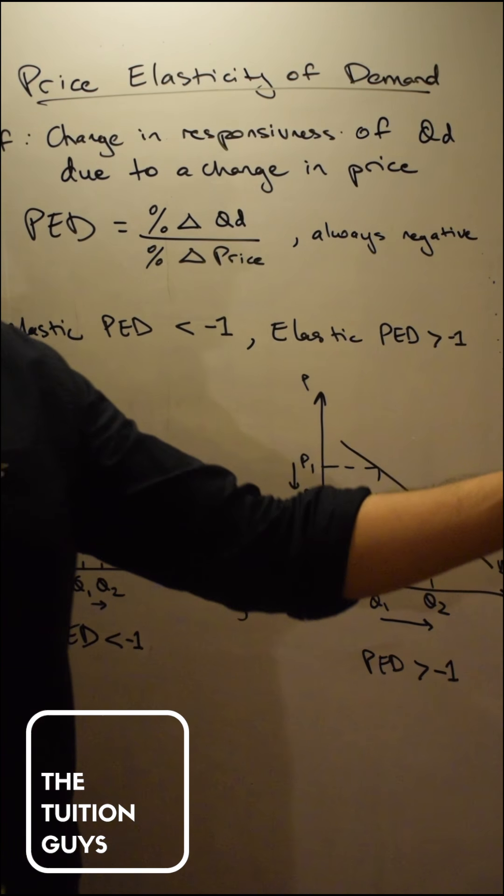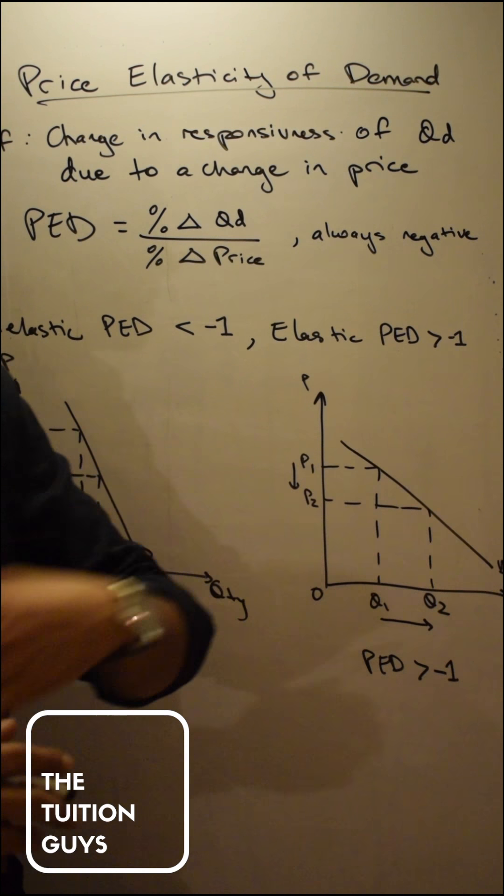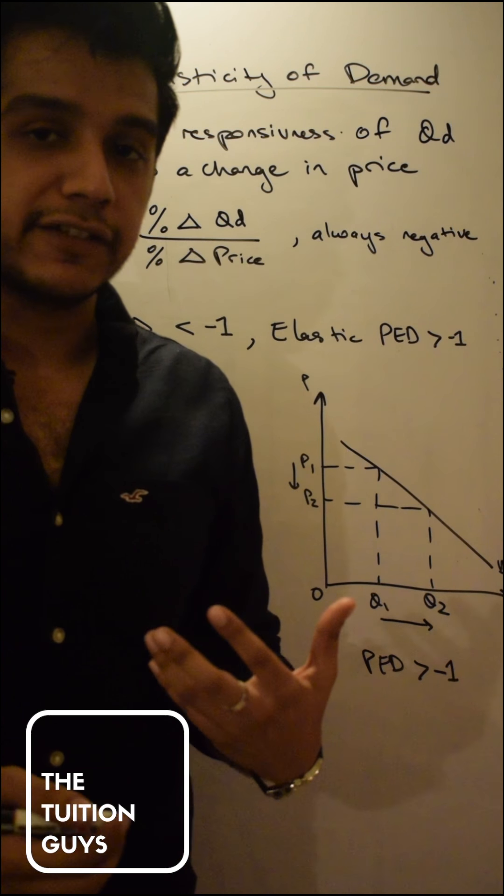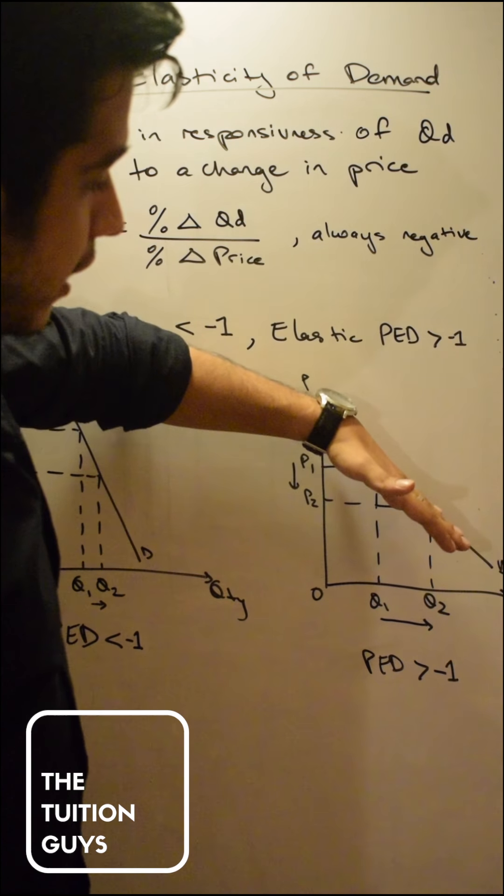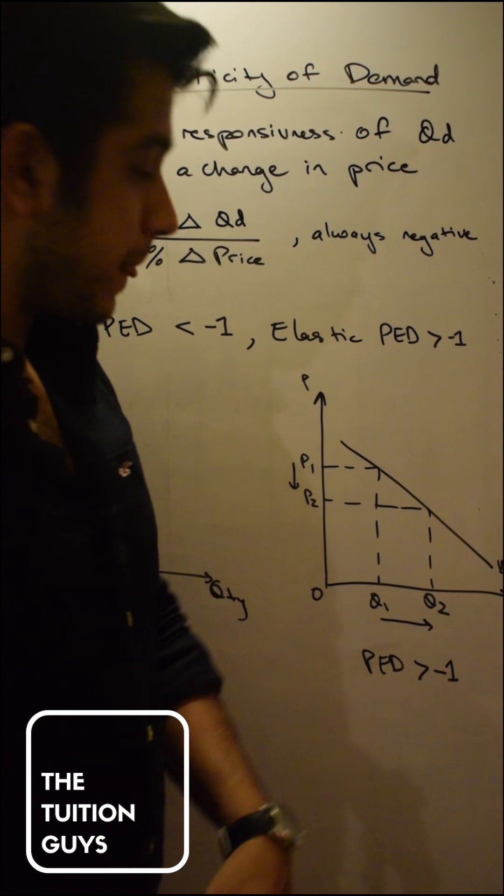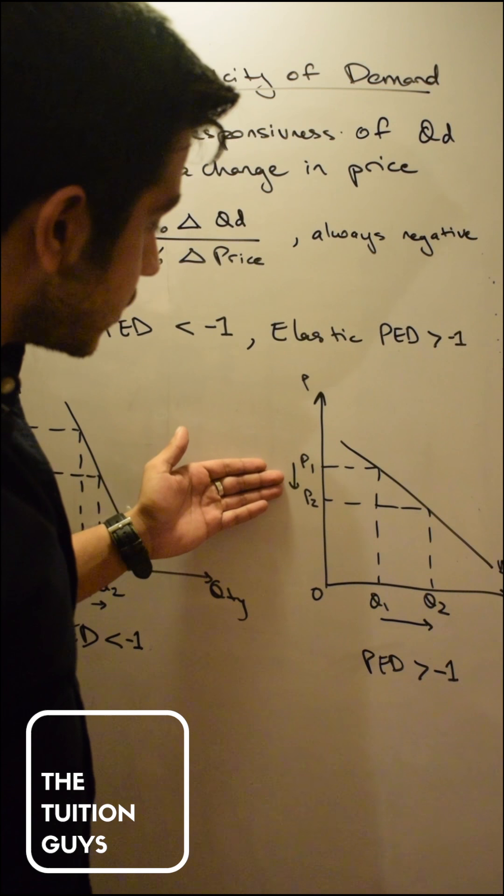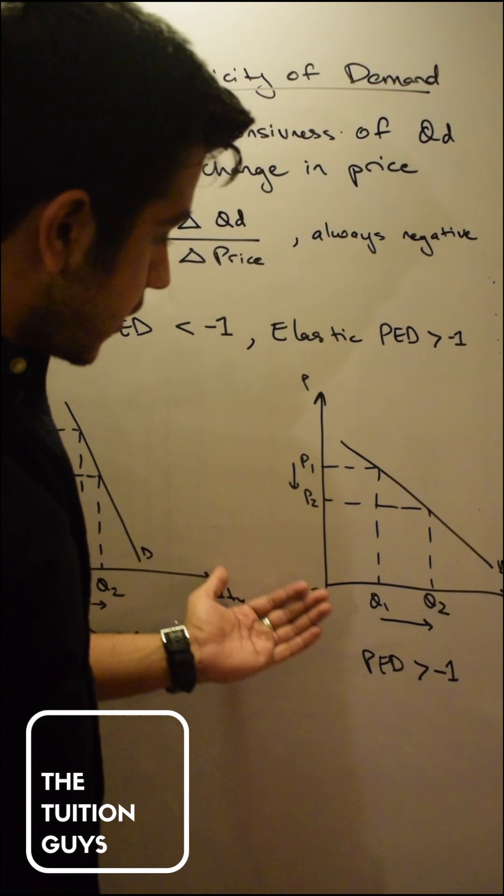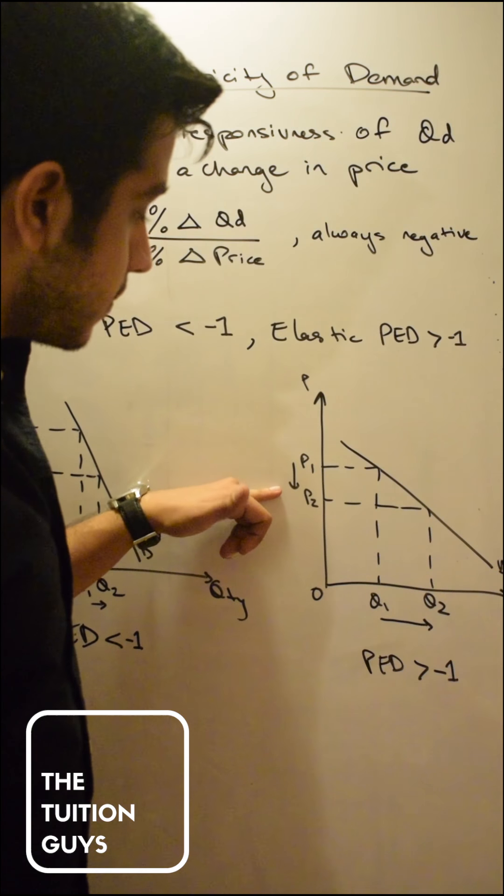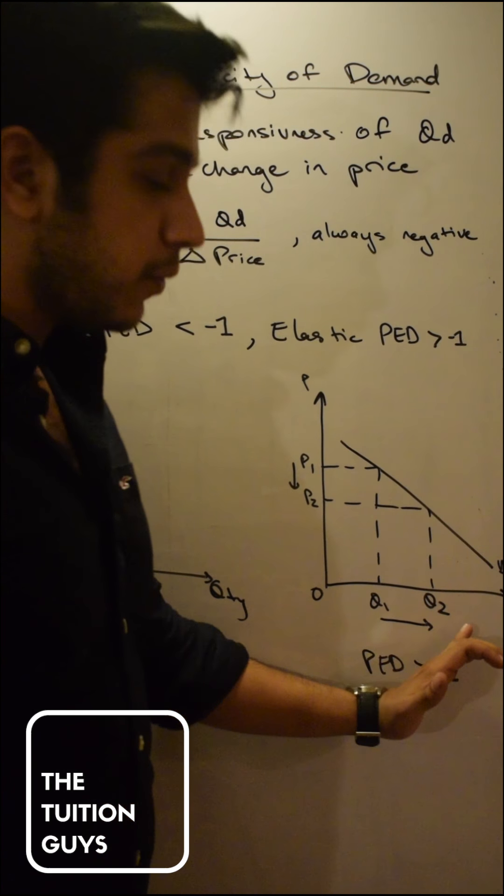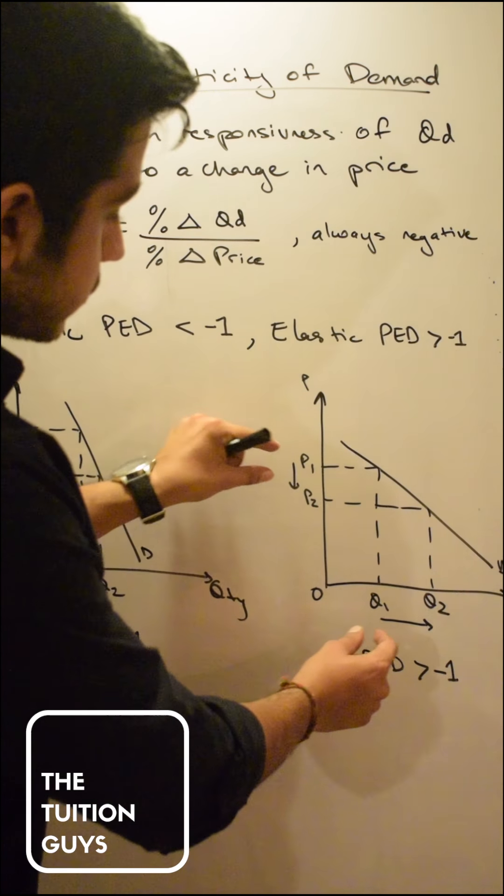All right, now you basically have two extremes in PED. One could be elastic and one could be inelastic. Now let's talk about elastic first. Elastic is basically, as seen over here, is a relatively straighter demand curve and that means that due to a small change in price there's a larger change in quantity demanded.